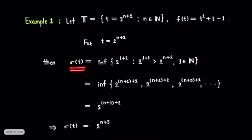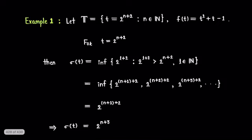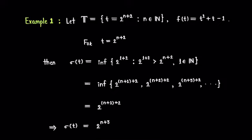Then we have σ(t) = infimum of the set of all elements of the form 2^n + 2 such that 2^n + 2 is strictly greater than t, where n is some natural number. This set contains all numbers of the form 2^(n+1) + 2, 2^(n+2) + 2, 2^(n+3) + 2, and so on. Clearly, its infimum is 2^(n+1) + 2. So we get σ(t) = 2^(n+1) + 2, that is σ(t) = 2^(n+3).